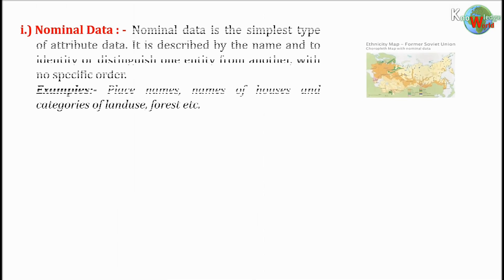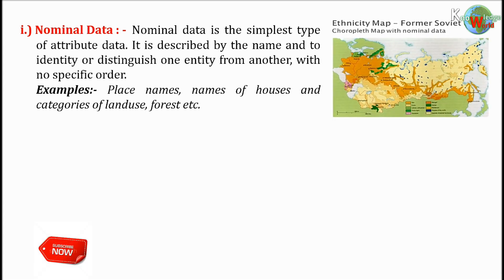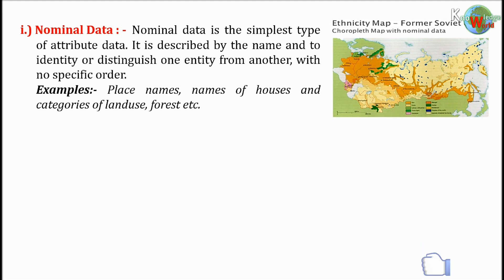Nominal data is the simplest type of attribute data. It is described by name to identify or distinguish one entity from another, with no specific order. Examples include place names, names of houses, and categories of land use such as forest, etc.